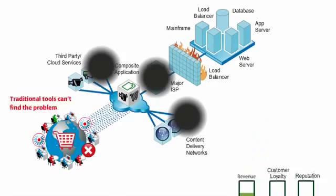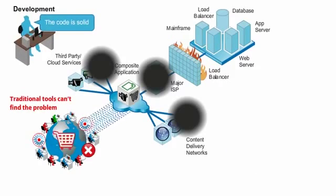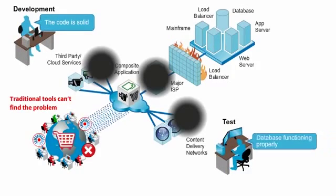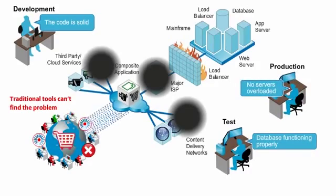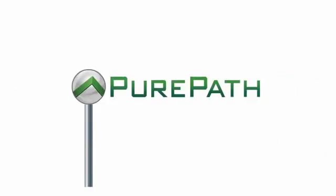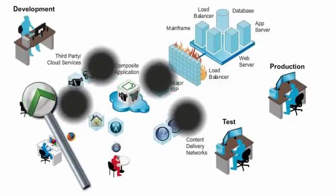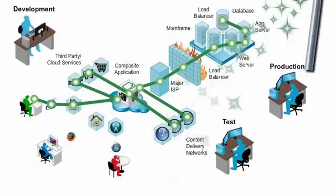Once discovered, a problem can still dodge efforts to fix it if IT cannot identify exactly what happened or reproduce the problem. Here's the magic of PurePath: a complete multidimensional scan of every transaction.